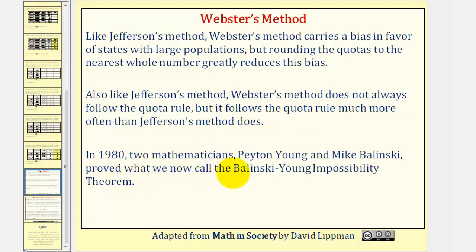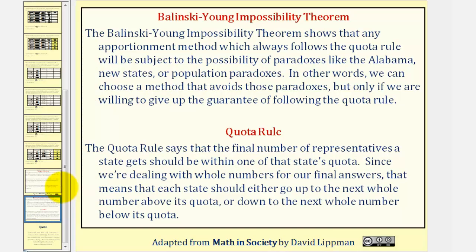In 1980, two mathematicians, Peyton Young and Mike Balinski, proved what we now call the Balinski-Young impossibility theorem. The Balinski-Young impossibility theorem shows that any apportionment method which always follows the quota rule will be subject to the possibility of paradoxes — like the Alabama, new states, or population paradoxes — that we've already discussed. In other words, we can choose a method that avoids these paradoxes, but only if we are willing to give up the guarantee of following the quota rule.